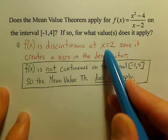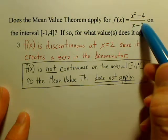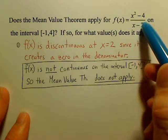It's not continuous since it creates a zero at two. If I plug in two to the denominator, it creates a zero. You can't have a zero on the bottom.